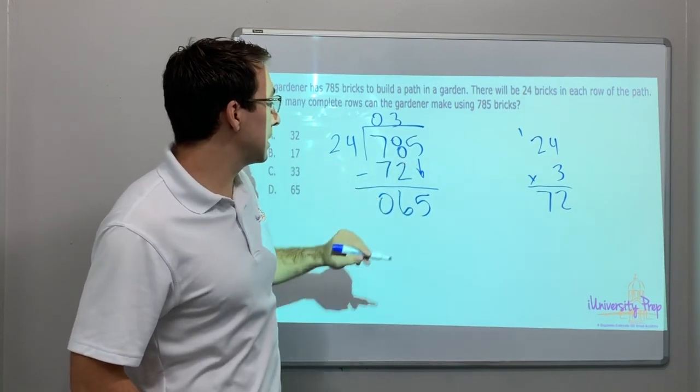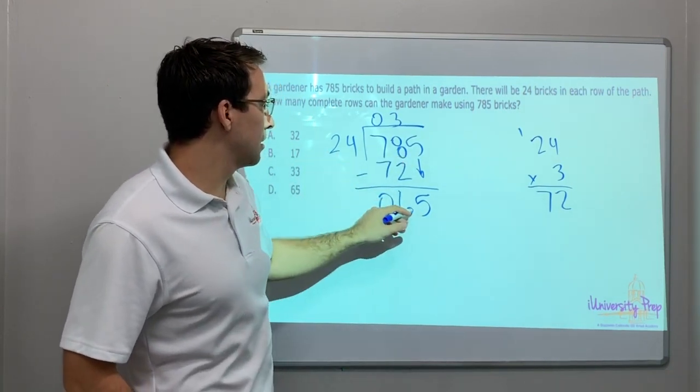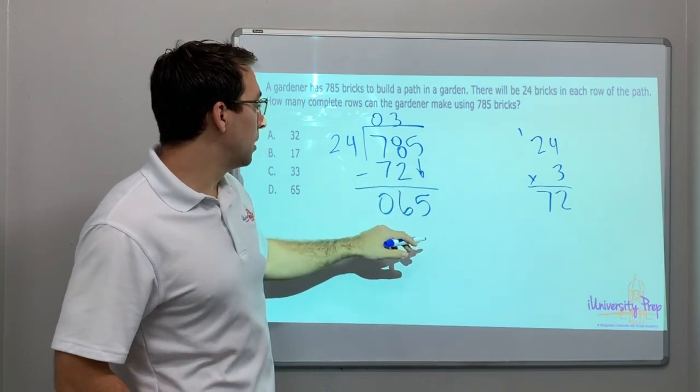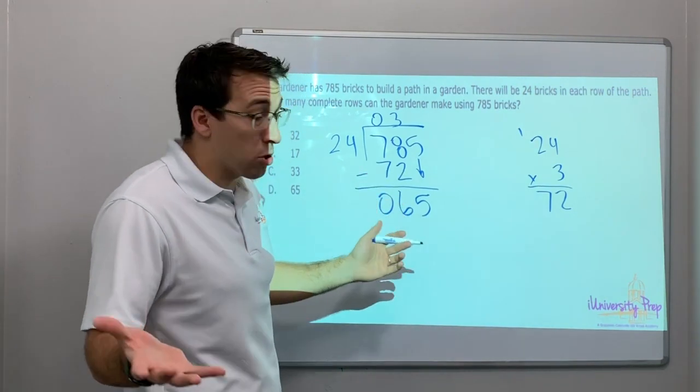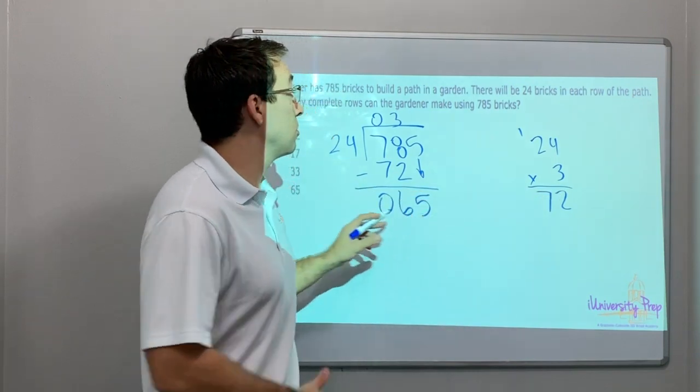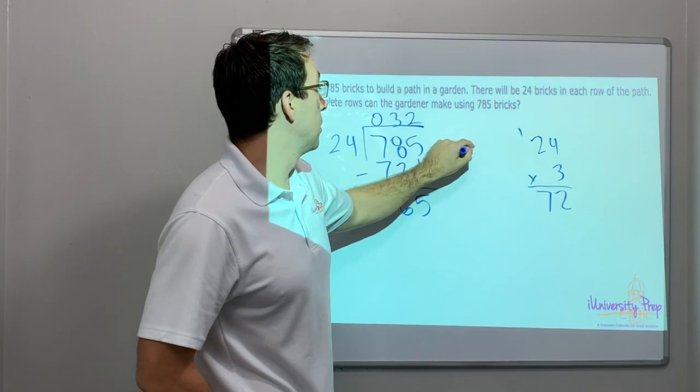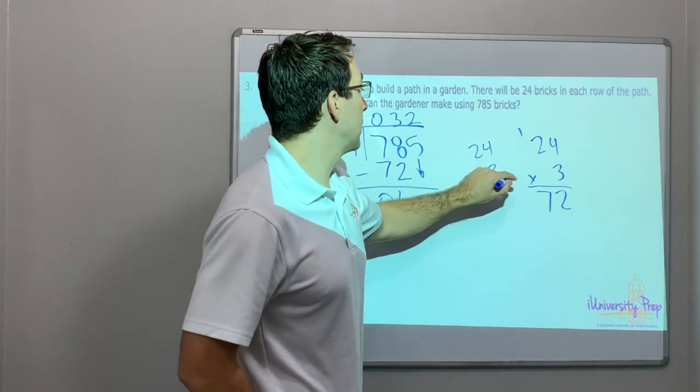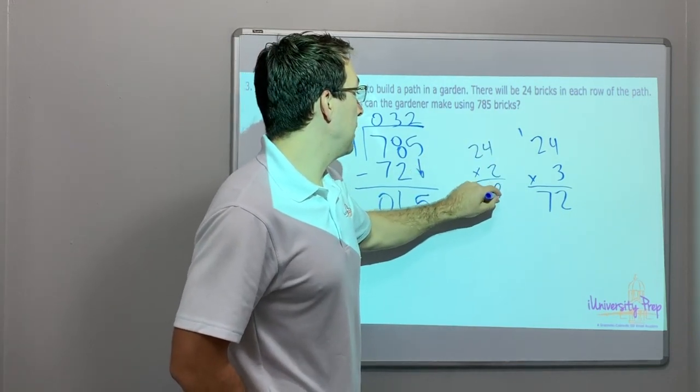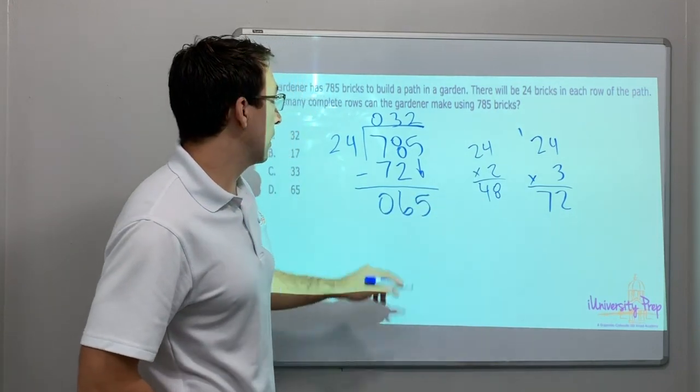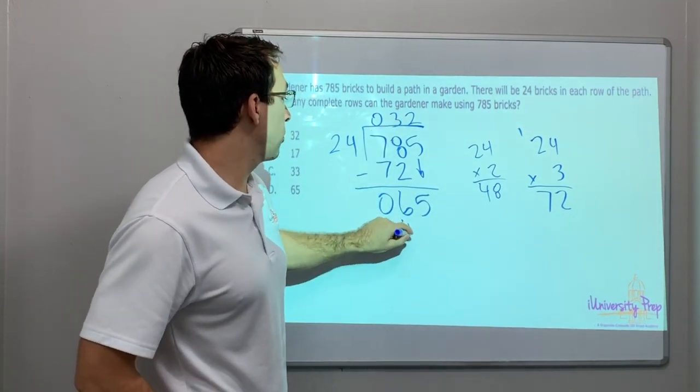24 times 6. Or times 10. Well, I'm going to go back to the quarters. We know 24 times 3 is 72. So it has to be less than 3. So we'll do 24 times 2. 24 times 2 is 8 and 48. 24 times 2 is 48.